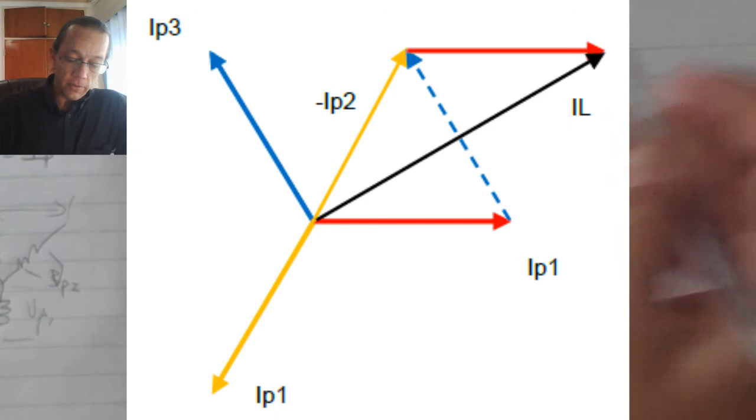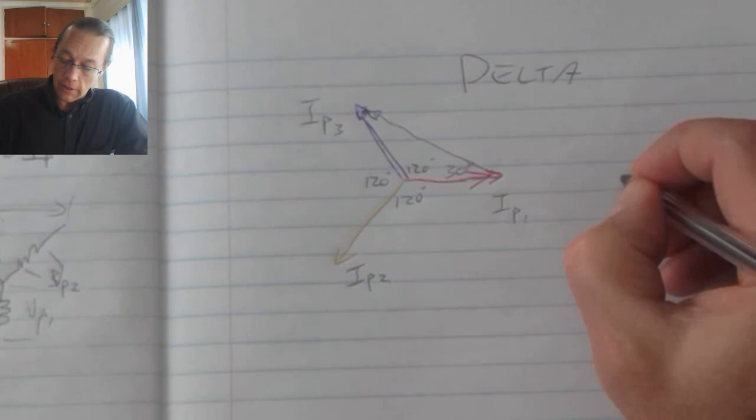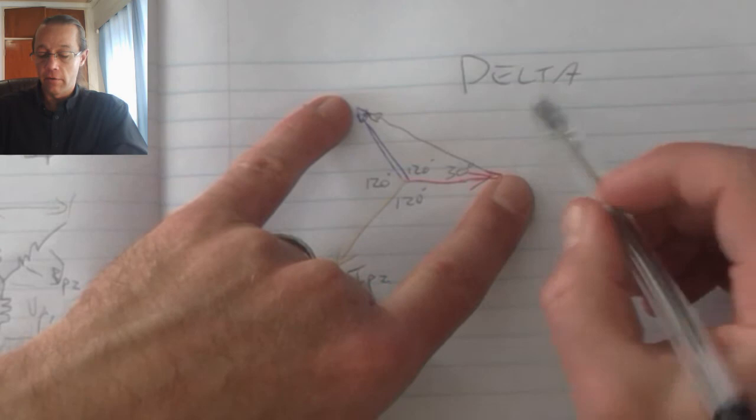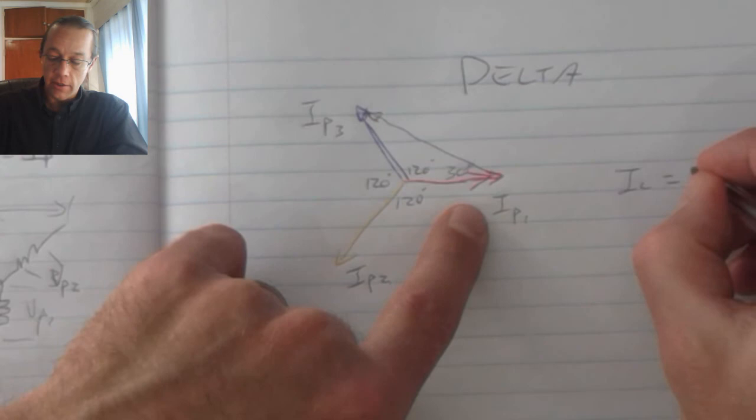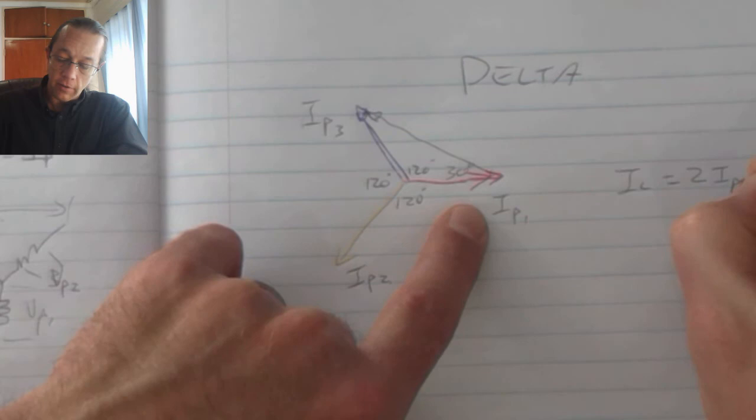So if I calculate IL, my line current—remember that's the current on two phases—my line current is equal to two phase currents that has a phase shift or an angle between them of 30 degrees.